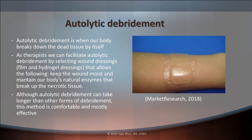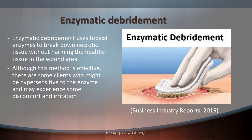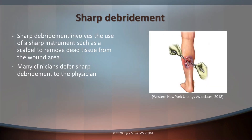The second method is called enzymatic debridement, also known as selective debridement. It uses topical enzymes to break down dead or necrotic tissue without harming the healthy tissue in the wound area. Although effective, it's not appropriate for everybody, as some clients may be hypersensitive to the enzyme and experience discomfort or irritation.